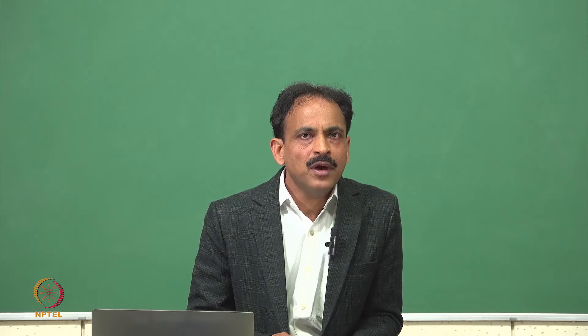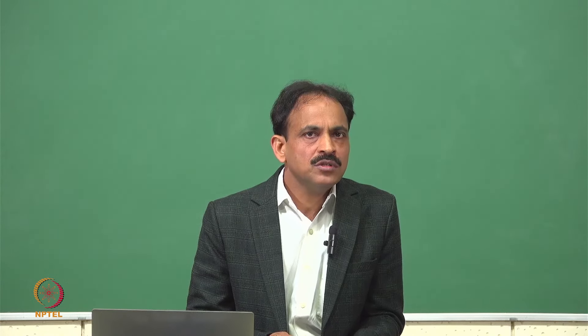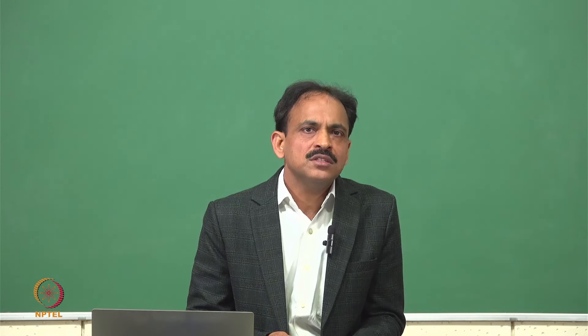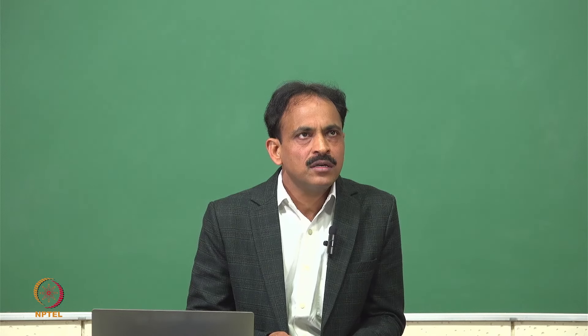The Journal Citation Indicator (JCI) is a new metric from Clarivate Analytics introduced in 2021 to measure the citation impact of a journal's recent publications using a field-normalized calculation. It provides a single journal-level metric that can be easily interpreted and compared across disciplines. JCI is based on journal citation performance across three full years of citation data rather than a single year's snapshot across two years, and focuses entirely on articles and reviews. It is calculated for all journals in Web of Science core collection and published in JCR.